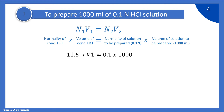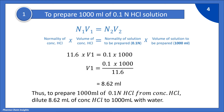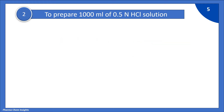Putting in the values: 11.6 × V1 = 0.1 × 1000, so V1 = (0.1 × 1000) / 11.6. By calculating, we get 8.62 ml. Thus, to prepare 1000 ml of 0.1 normal HCl from concentrated HCl, dilute 8.62 ml of concentrated HCl to 1000 ml with water.